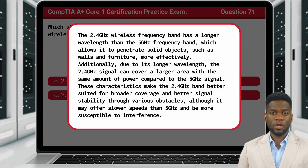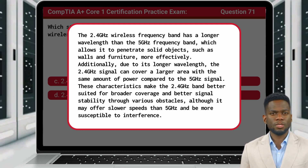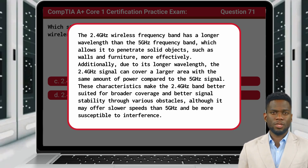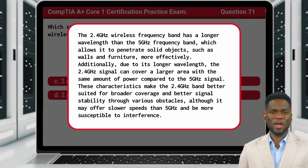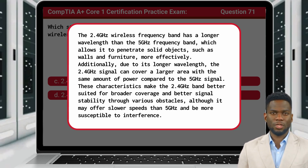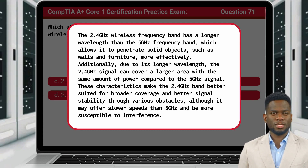The 2.4 GHz wireless frequency band has a longer wavelength than the 5 GHz frequency band, which allows it to penetrate solid objects, such as walls and furniture, more effectively. Additionally, due to its longer wavelength, the 2.4 GHz signal can cover a larger area with the same amount of power compared to the 5 GHz signal. These characteristics make the 2.4 GHz band better suited for broader coverage and better signal stability through various obstacles, although it may offer slower speeds than 5 GHz and be more susceptible to interference.